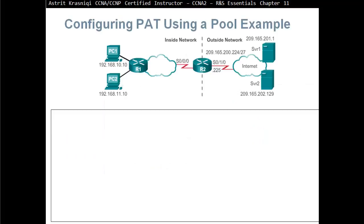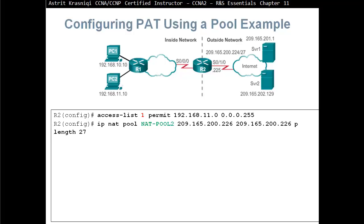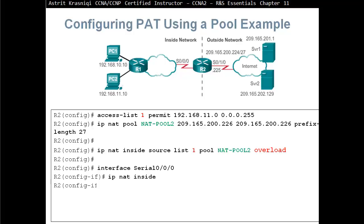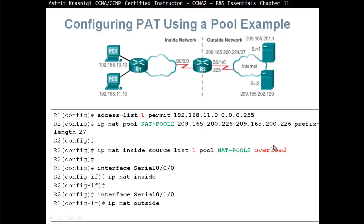To configure PAT using a pool — since we can configure it on an interface or with a pool — it is essentially the same as dynamic NAT, with one additional word. We create an access control list to permit which addresses should be translated, create the pool of public IPv4 addresses available, then bind the access list to the pool with 'IP NAT inside source list 1 pool NAT pool 2' — but this time we add 'overload', meaning we are translating port numbers as well.